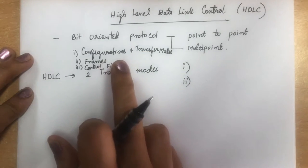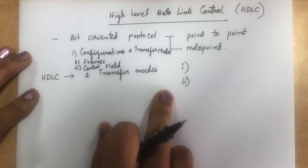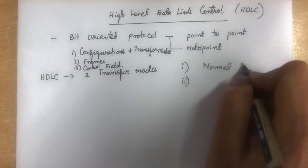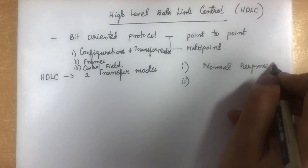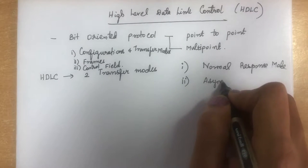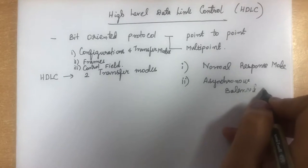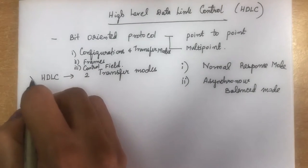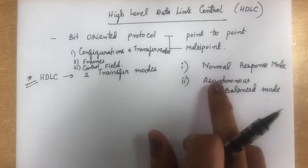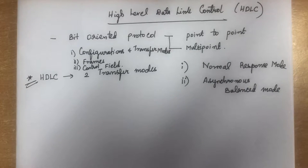First we will see the transfer modes. HDLC provides two transfer modes: one is Normal Response Mode, and the second is Asynchronous Balanced Mode. We will see them one by one.